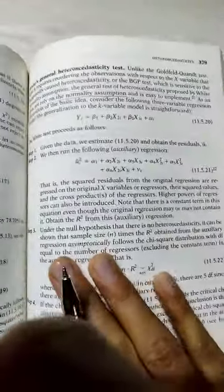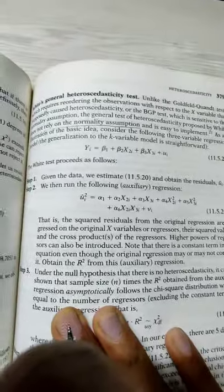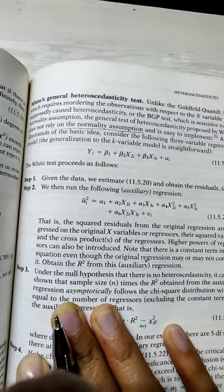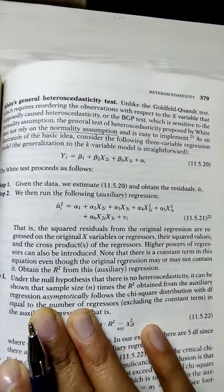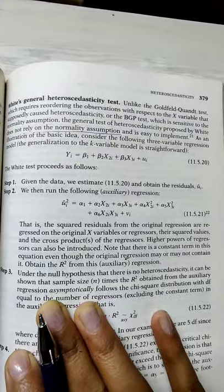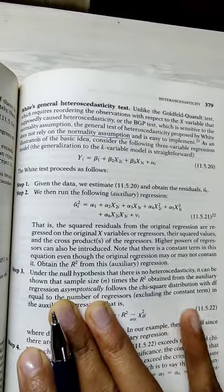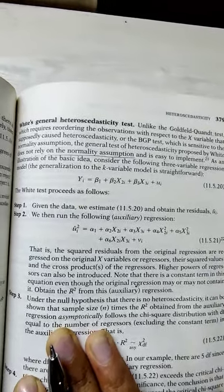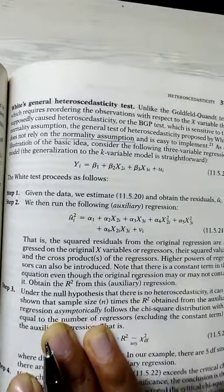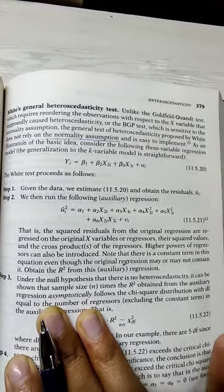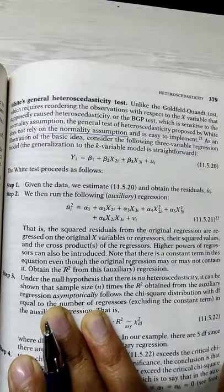The White test is quite an important test for heteroscedasticity. The first point is that with the normality assumption, we assumed that BPG or Goldfeld-Quandt test assumes that ui's are normally distributed. But here the White test does not rely on the normality assumption. First point: this test does not rely on the normality assumption and is easy to implement.